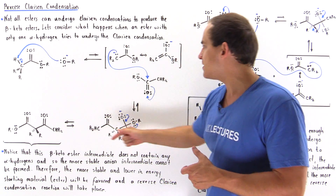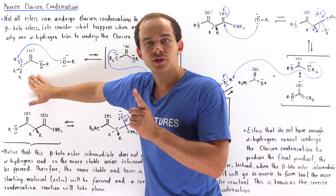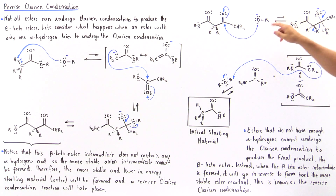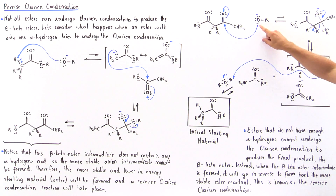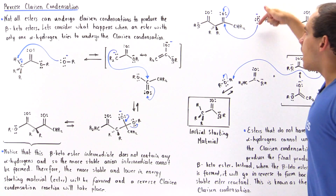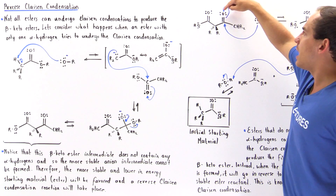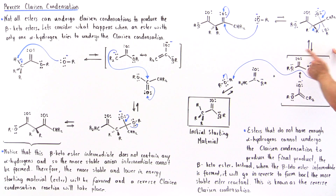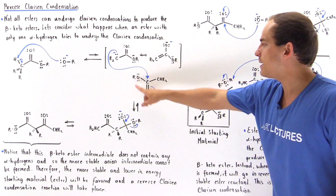A reverse Claisen condensation will take place and we will reform our initial starting material. In the reverse mechanism, the alkoxide that was kicked off now acts as a nucleophile, attacking the carbonyl carbon, displacing the pi bond and placing the two electrons onto the oxygen to form the tetrahedral intermediate. In the next step, the pi bond is reformed and the leaving group is kicked off — those two electrons end up on the alpha carbon to reform the resonance-stabilized ester enolate, as well as the molecule that was kicked off in the forward step.